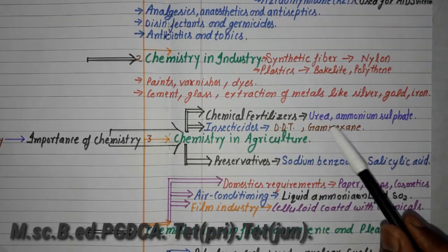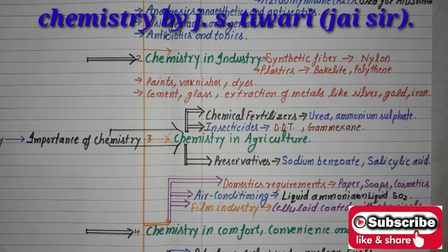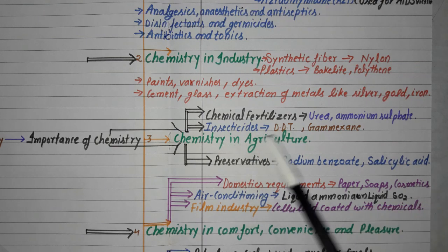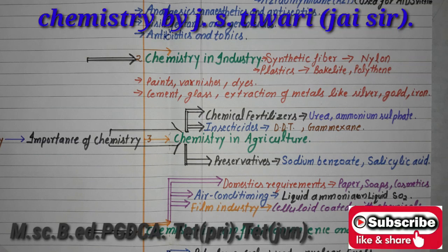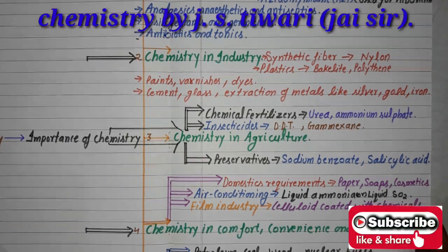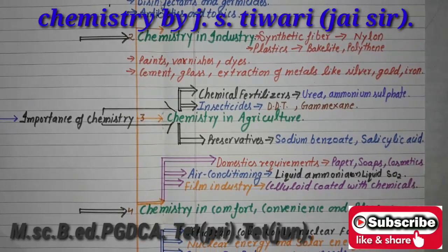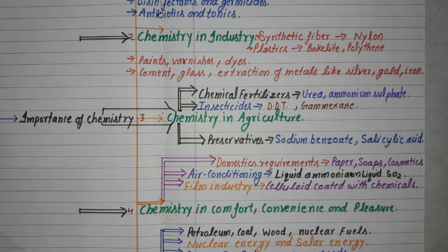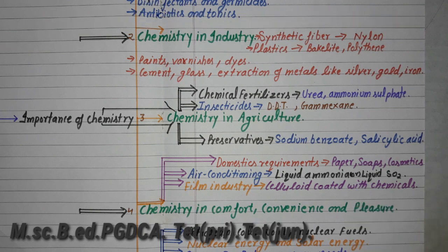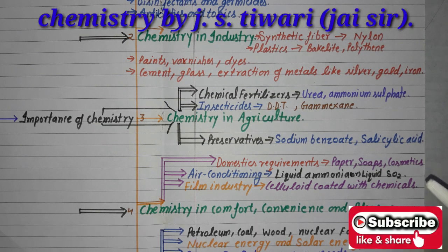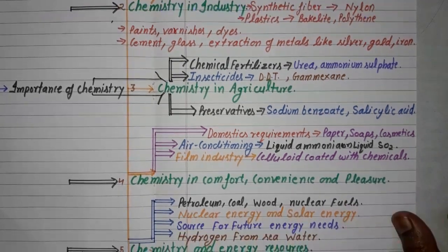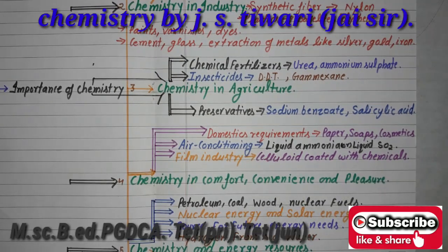Chemical fertilizers such as urea and ammonium sulfate are chemicals applied to fields to increase crop yield. Insecticides — many insects attack crops, which are controlled using DDT or gammaxene, though DDT has been banned as a dangerous chemical. Preservatives like sodium benzoate and salicylic acid are used in our homes to preserve food and materials for many days.